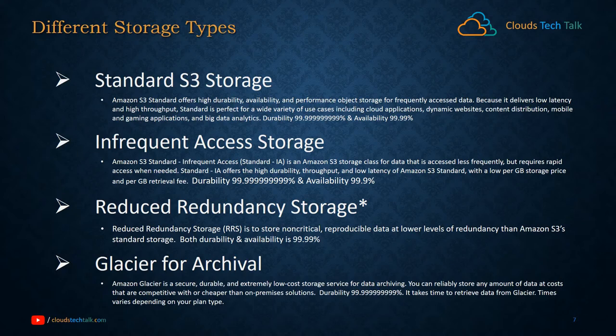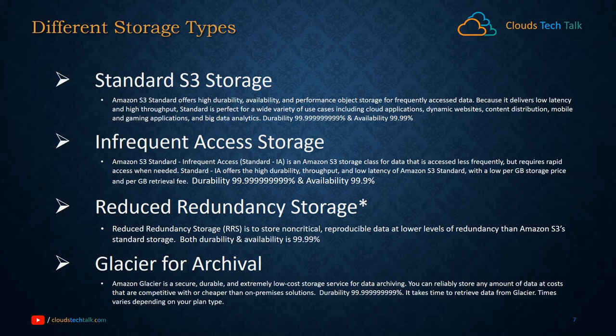The third type is Reduced Redundancy Storage, called RRS. RRS is designed to store non-critical, reproducible data at a lower level of redundancy than Amazon S3 standard. Both durability and availability are 99.99%, meaning AWS has reduced redundancy for this storage type, offering less durability and a possibility of losing your files. If you can recreate any lost files, you may want to use RRS to minimize cost further. AWS maintains only one concurrent facility for RRS and does not replicate objects into different storage, making it a bit cheaper.